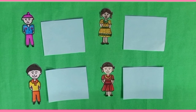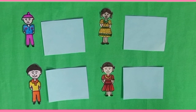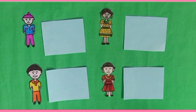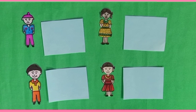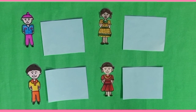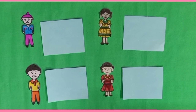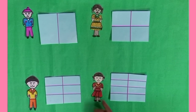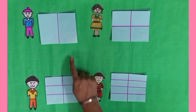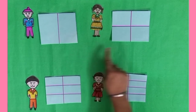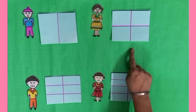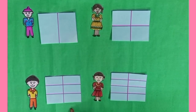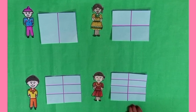Dear students, now each of them has one drawing sheet. The teacher asked them to divide their sheets into different equal parts according to their choice. Let's see who will divide their sheet into how many parts. Yashnur divided it into two equal parts, Anurit divided it into four equal parts, Deepak divided it into six equal parts, and Deepi divided it into eight equal parts.